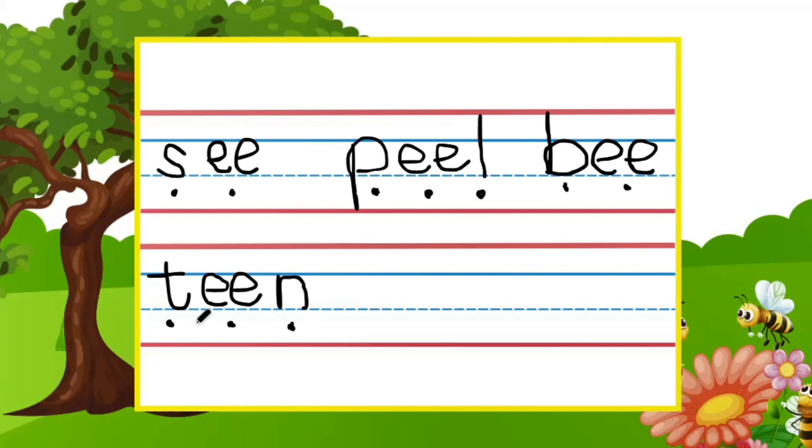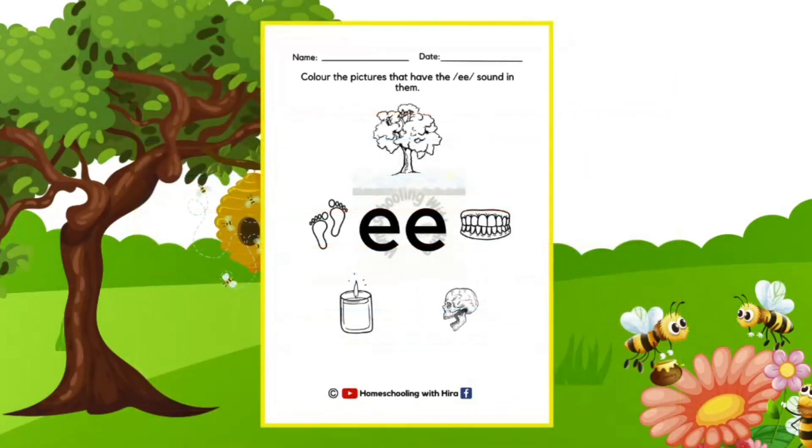Let's try to write T-E-E-N, teen. Say it quickly, teen. Yes, it's right. The last word is feel. Try to write the word feel. Feel. What is the first sound? F-E-E-L, feel. Let's write it now. F-E-E-L, feel. Quickly, feel. And we are done.